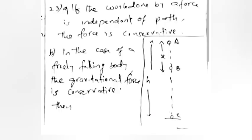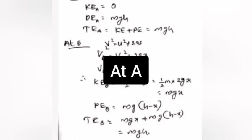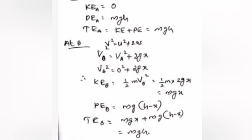Answer: If the work done by a force is independent of path, the force is conservative. In the case of a freely falling body, the gravitational force is conservative. At point A: KE_A equals 0, PE_A equals mgh, and Total Energy TE_A equals KE plus PE equals mgh.